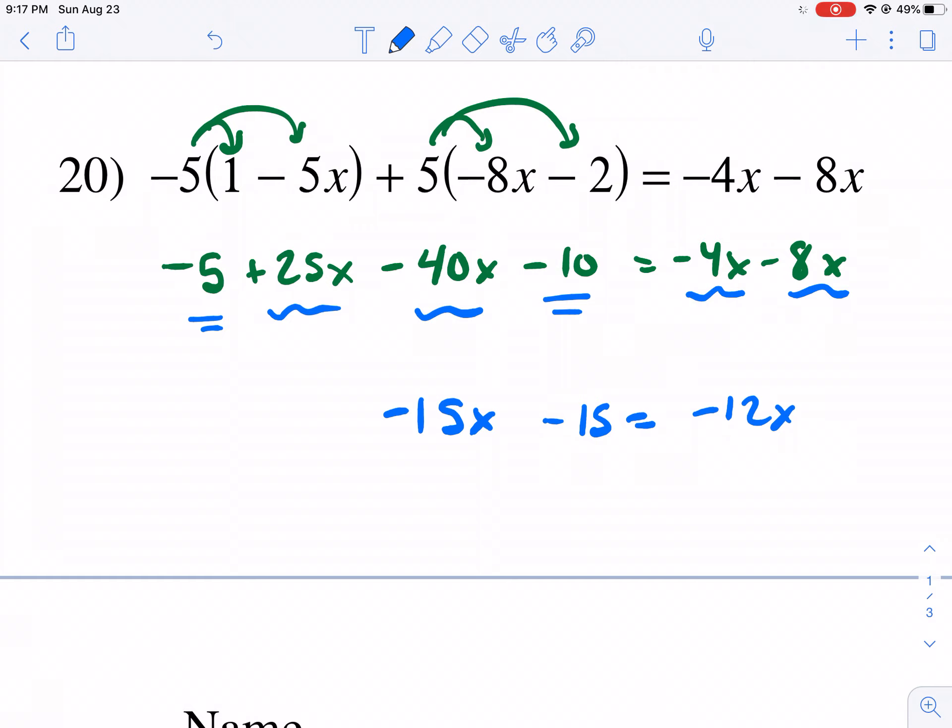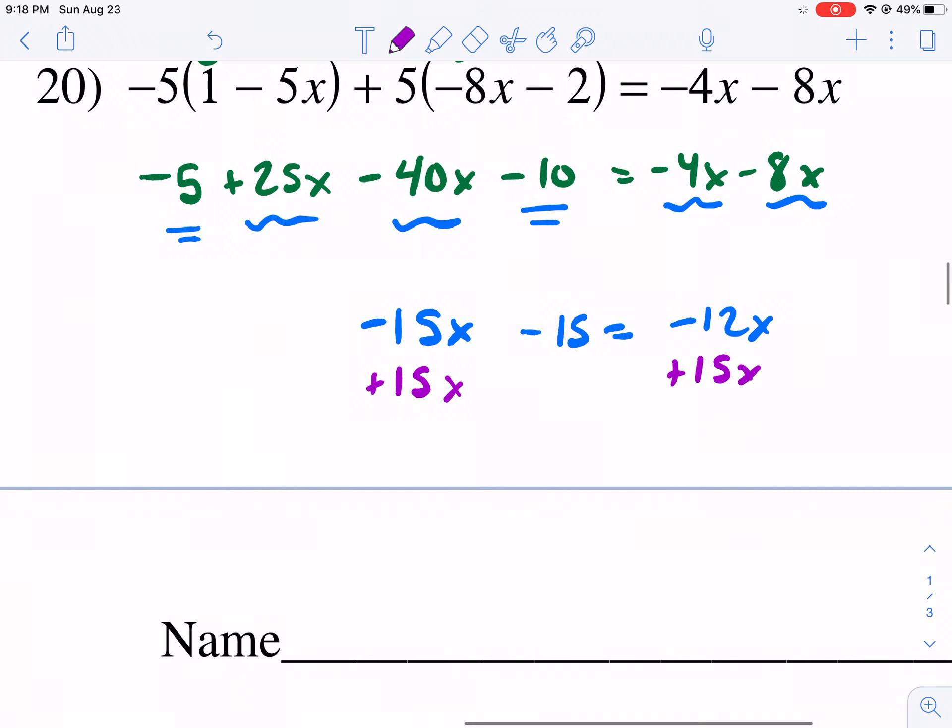What do I like to do from here? Generally, I like to move the smaller of the variables, the smallest variable. So in this case, it's the, let me use a different color than the green. It's the smallest of the variable. So let's add 15x to cancel out the negative 15x. And we are going to get 0 and negative 15 equals positive 3x. We're going to divide both sides by 3. And we get x equals negative 5. And there you have it.